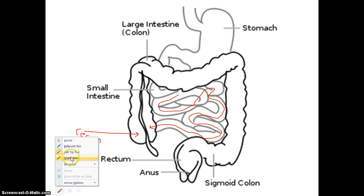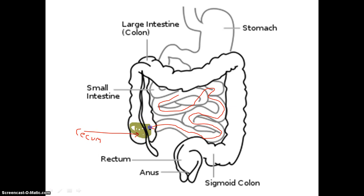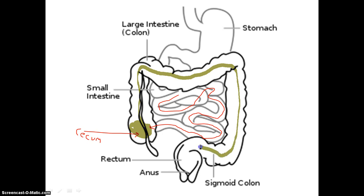Now what is the large intestine's job? Its main job is to absorb water out of the chyme. The chyme that just entered into our large intestine is going to go through the large intestine all the way around, and as it's going around, water is being absorbed out of it. If we didn't have the large intestine, we would probably be dehydrated a lot. The large intestine plays a very big role in water regulation in our body.